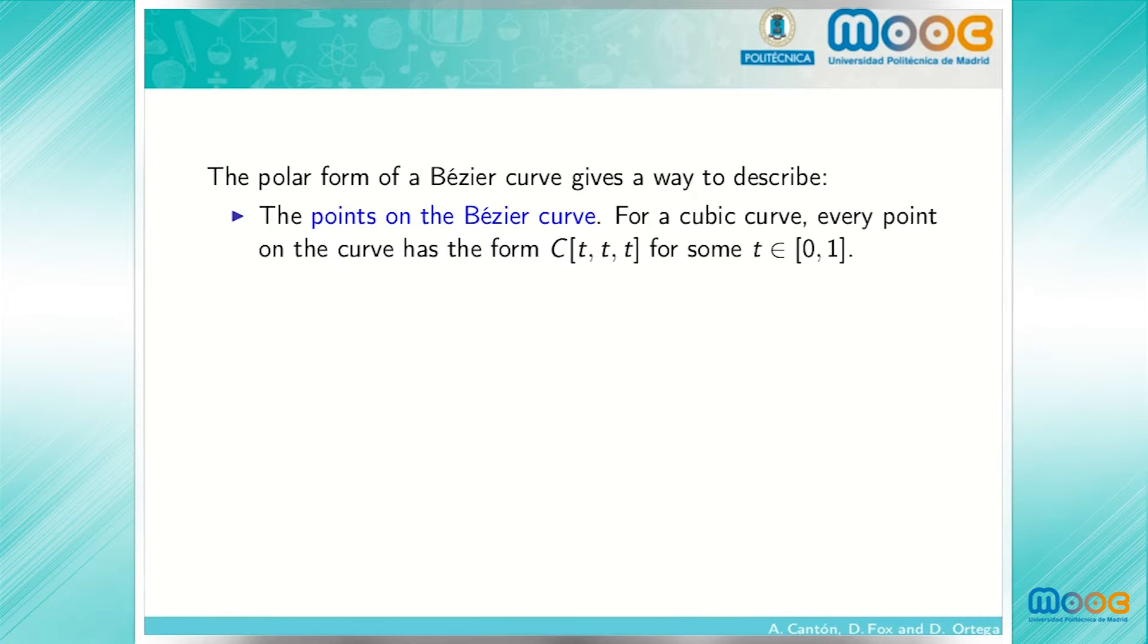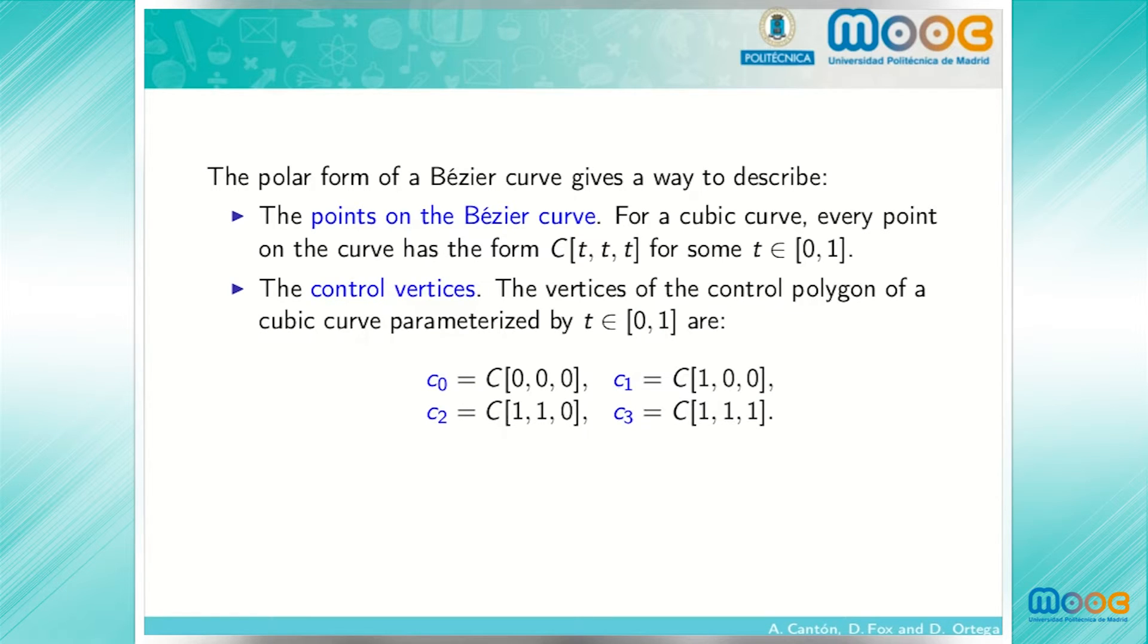The polar form of a Bezier curve gives, on the one hand, a way to describe the points on the Bezier curve. For a cubic curve, every point on the curve has the form c of t, t, t, for some t. It also gives a way to describe the control vertices. The vertices of the control polygon of a cubic curve are obtained by setting the proportions all equal to 0 or to 1.